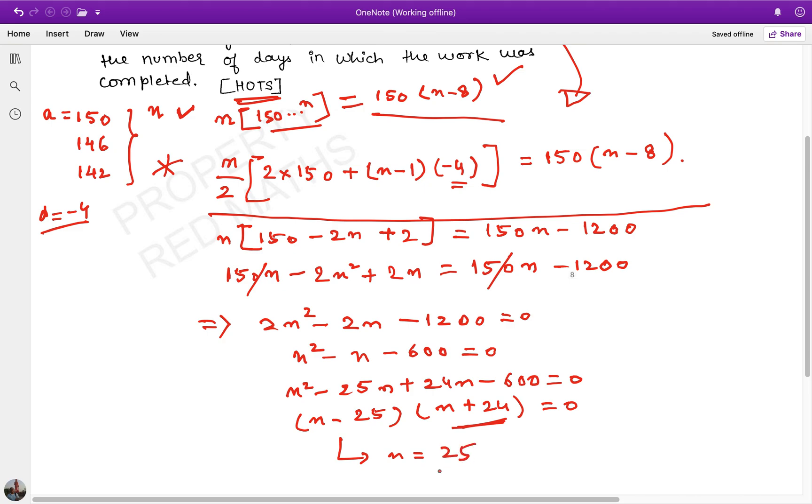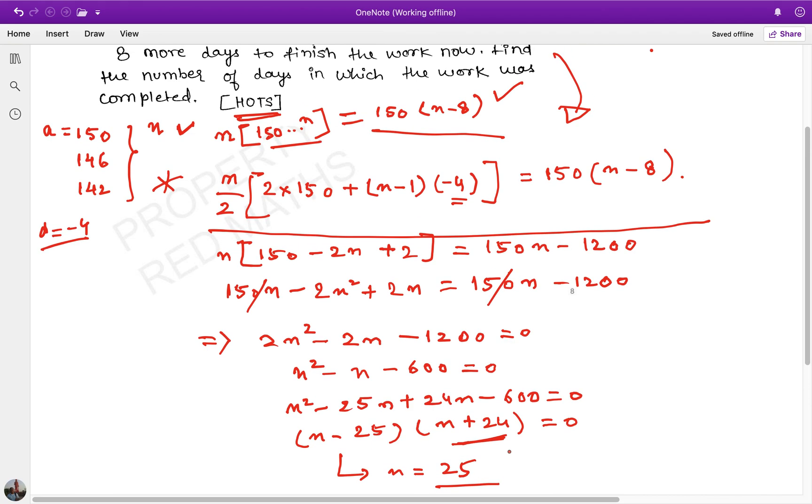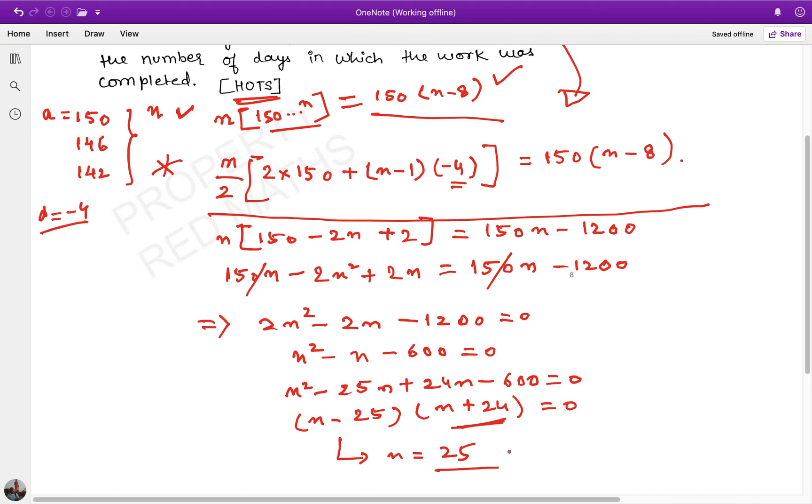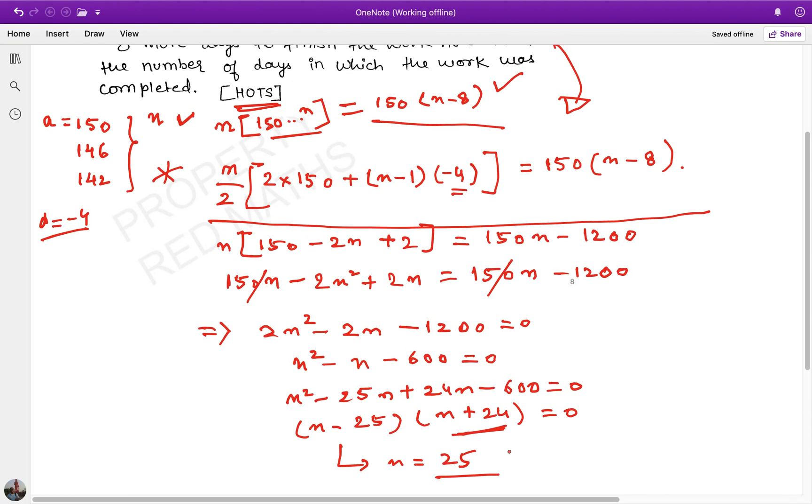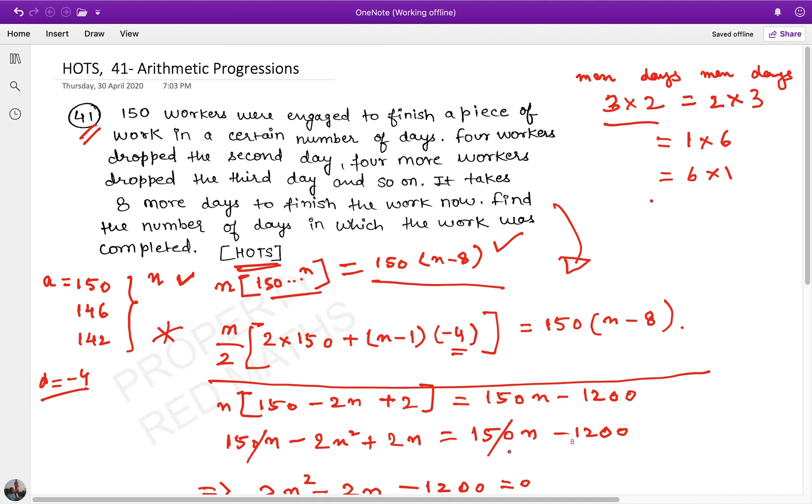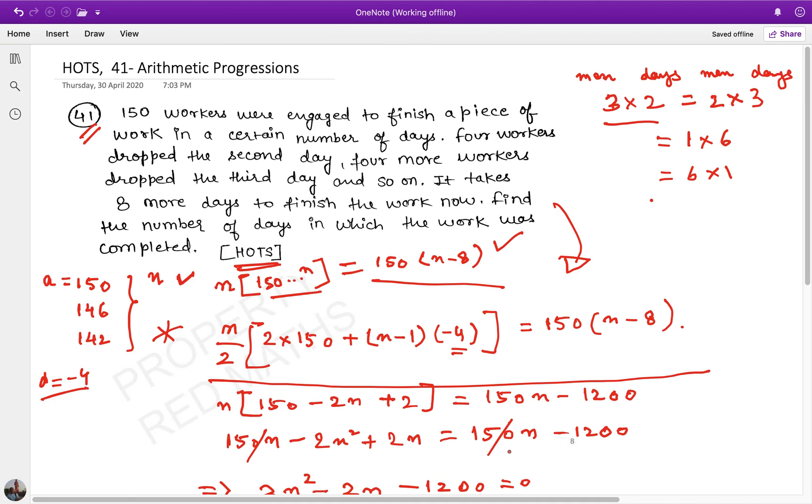This means n equals 25 is our answer. The question asked how many days it took to complete the work. The answer is that with decreasing workers, it took 25 days. If all 150 people had worked continuously, it would have taken 17 days.